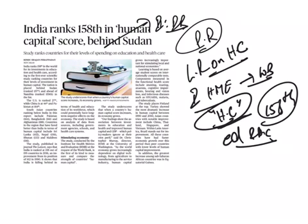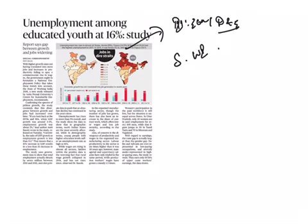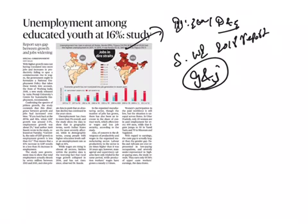The next article is 'Unemployment Among Educated Youth at 16 Percent,' under GS Paper 3, Economy — subtopic of Development and Employment. From the prelims level, we should know the 'State of Working India 2018' report, released by Azim Premji University's Centre for Sustainable Employment. The study found an increase in divergence between growth and jobs — despite economic growth, there is a lot of unemployment.